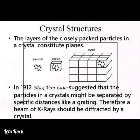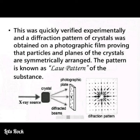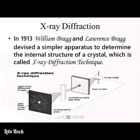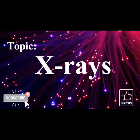Crystal structures: The layers of closely packed particles in a crystal constitute planes. In 1912, Max von Laue suggested that the particles in a crystal might be separated by specific distances like a grating, and therefore a beam of X-rays should be diffracted by a crystal. This was experimentally verified, producing a diffraction pattern on a photographic film proving that particles and planes of the crystals are symmetrically arranged — known as the Laue pattern. In 1913, William Bragg and Lawrence Bragg devised a simpler apparatus to determine the internal structure of a crystal, called the X-ray diffraction technique.